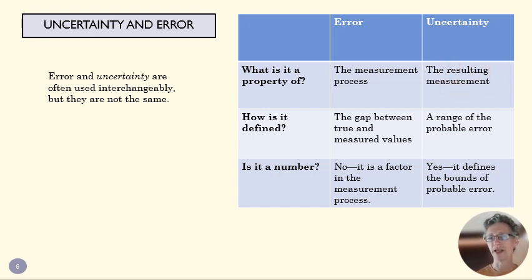Uncertainty is a number. That's the thing that we've defined. That's our estimate of what that error is. So we can use both of those. And oftentimes, we'll use them interchangeably. But just recognize that uncertainty is a number that we come up with to describe error, which we don't really know what it is, but we know it's there.